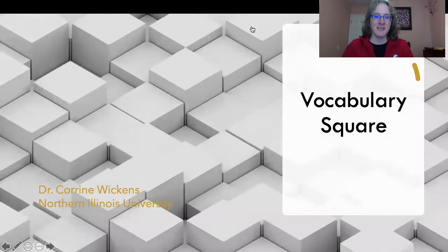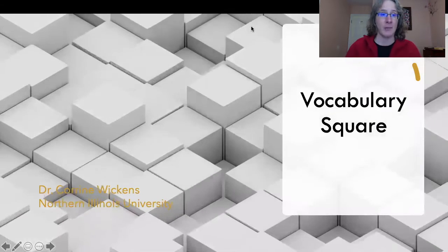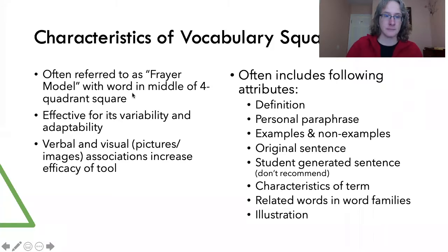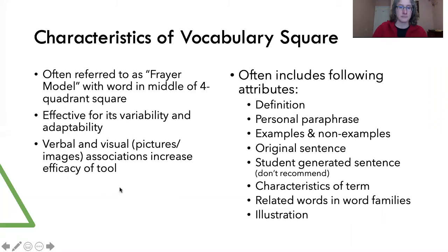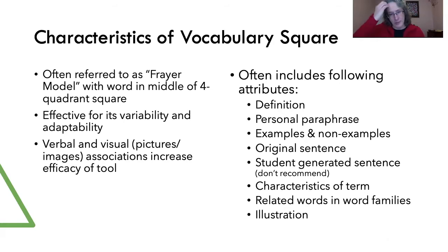Hi, I'm Dr. Corinne Wickens and this conceptually vocabulary instruction video is going to model and discuss vocabulary squares. The characteristics of a vocabulary square is often referred to as a Frayer model, where essentially we have multiple quadrants — usually four — and either the word itself is in a quadrant or is in the middle. It's really super powerful for its variability and adaptability, as there are so many different ways we can adapt a Frayer model vocabulary square for different disciplines to help support students.